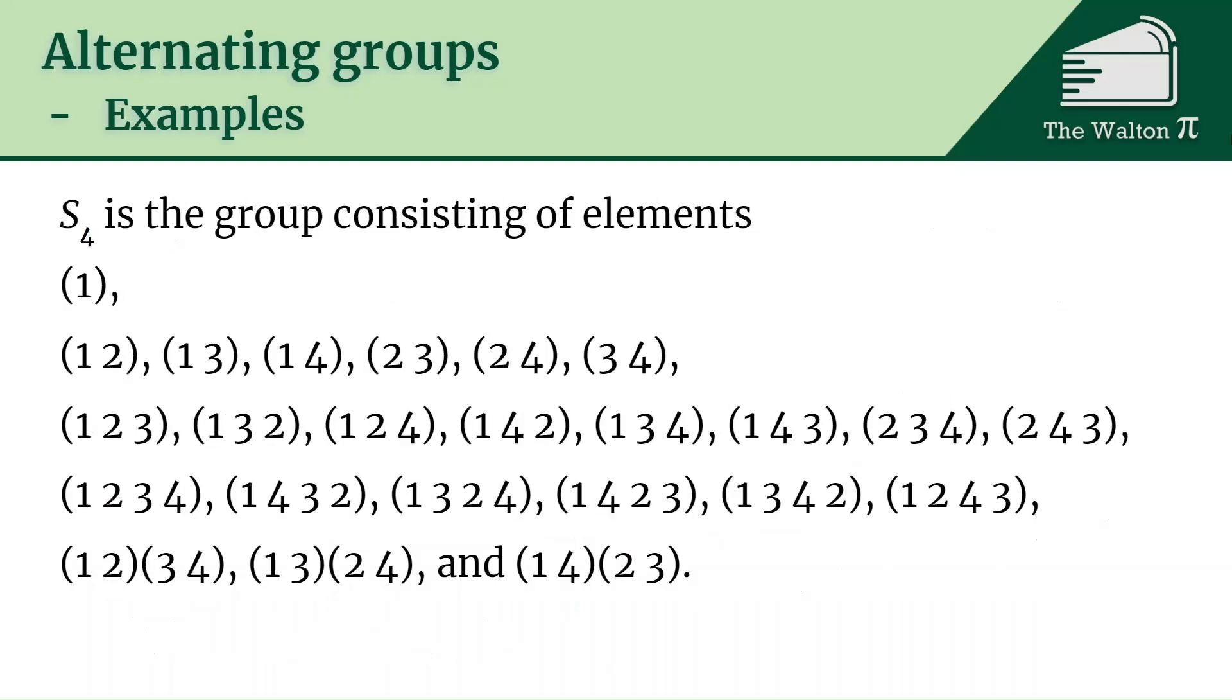Now S_4, there's a lot of stuff in S_4. We got (1), the identity. We have all the ways to switch just two things: (1 2), (1 3), (1 4), (2 3), (2 4), (3 4). We have all the three cycles, so it's a little loop of three elements. For example, 1 goes to 2, 2 goes to 3, and 3 goes back to 1. That's a 3 cycle. And we have eight of those: (1 2 3), (1 3 2), (1 2 4), (1 4 2), (1 3 4), (1 4 3), (2 3 4), and (2 4 3).